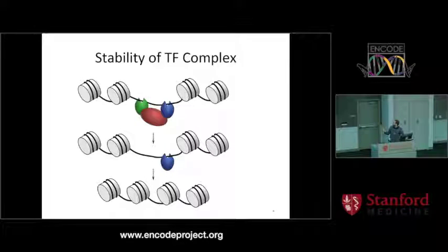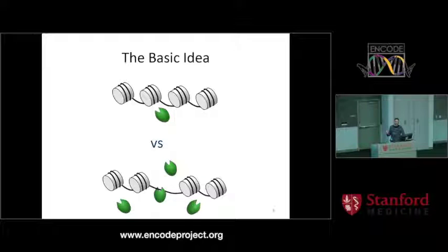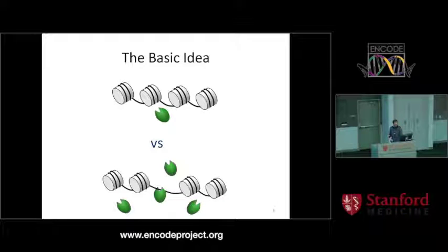You can ask the same question in the other direction: which factors are responsible for stability? So how would you study this with the ENCODE data that's out there? The basic idea is that if a factor has the ability to open up chromatin, then increasing the levels of this factor should open up chromatin in the regions where there are transcription factor binding sites for this factor.